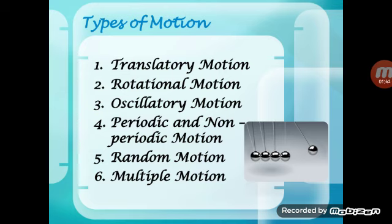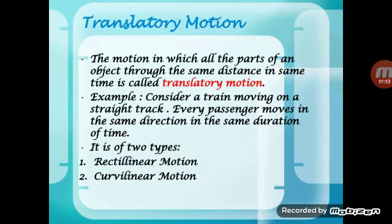The types of motion are: translatory motion, rotational motion, oscillatory, periodic and non-periodic motion, random motion, and also multiple motions. Let us study them one by one. Translatory motion is the motion in which all parts of an object move in the same direction, through the same distance, in the same time. An example is a train moving on a straight track.